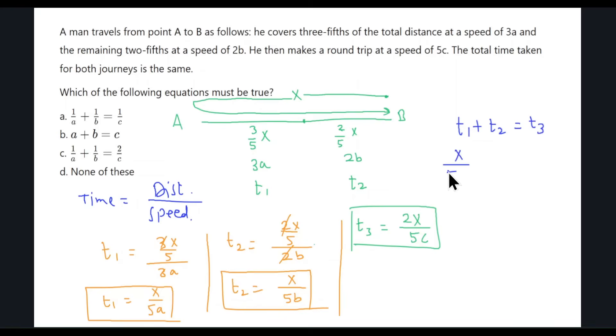So X over 5A plus X over 5B should equal 2X over 5C. X and 5 cancel out, so the answer is 1 over A plus 1 over B equals 2 over C, which looks like option C.